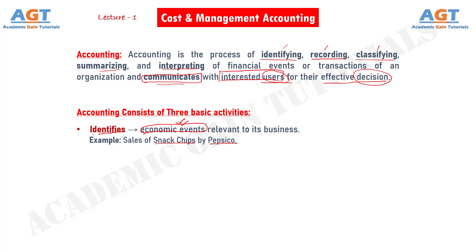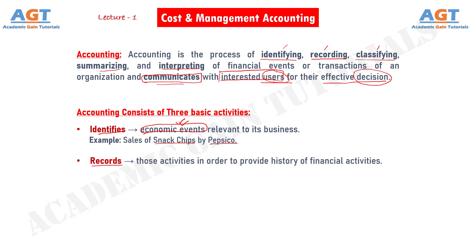After it identifies these economic events or activities, accounting then records those activities in order to provide a history of financial activities. It can do so by keeping a chronological diary of events occurring every day or at a given interval of time, ordered by date serially.